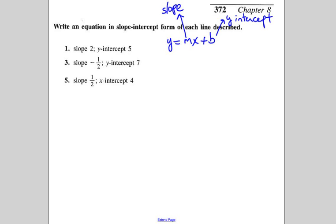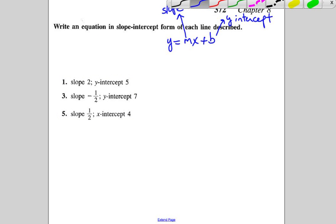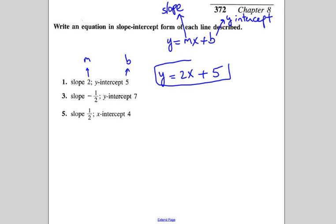So in number 1, we're almost done. There's not much work to do. This is m, and this is b, the y-intercept. So it says write an equation in slope-intercept form, so it's just y equals 2x plus 5, and we're done. That's the answer for number 1.